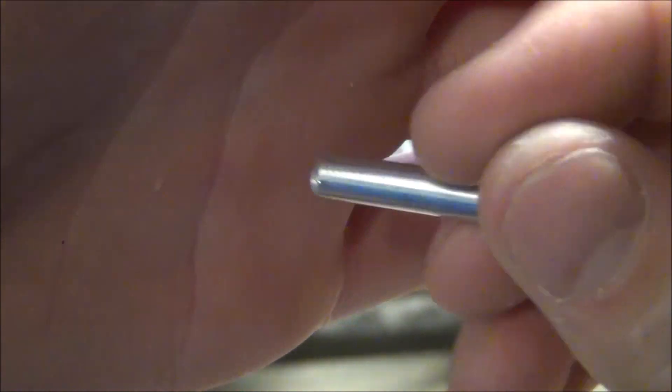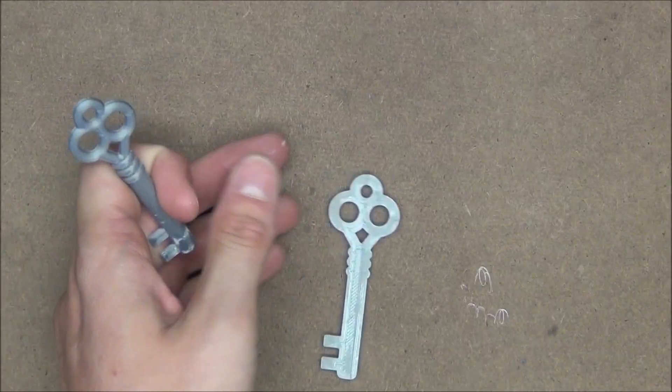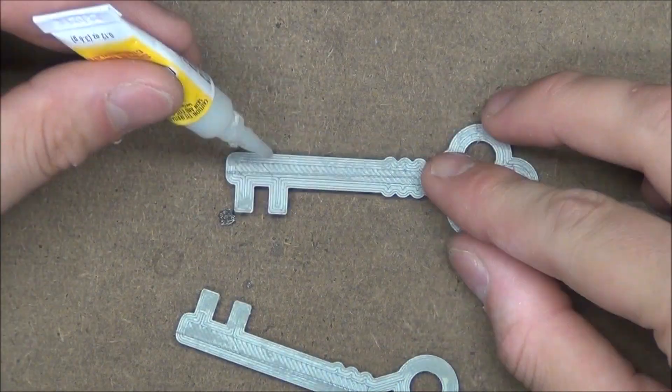Perfect. And actually while we have this in two pieces, let's not put it back together just yet. Instead, let's glue the two halves of the key together like we did the loop.